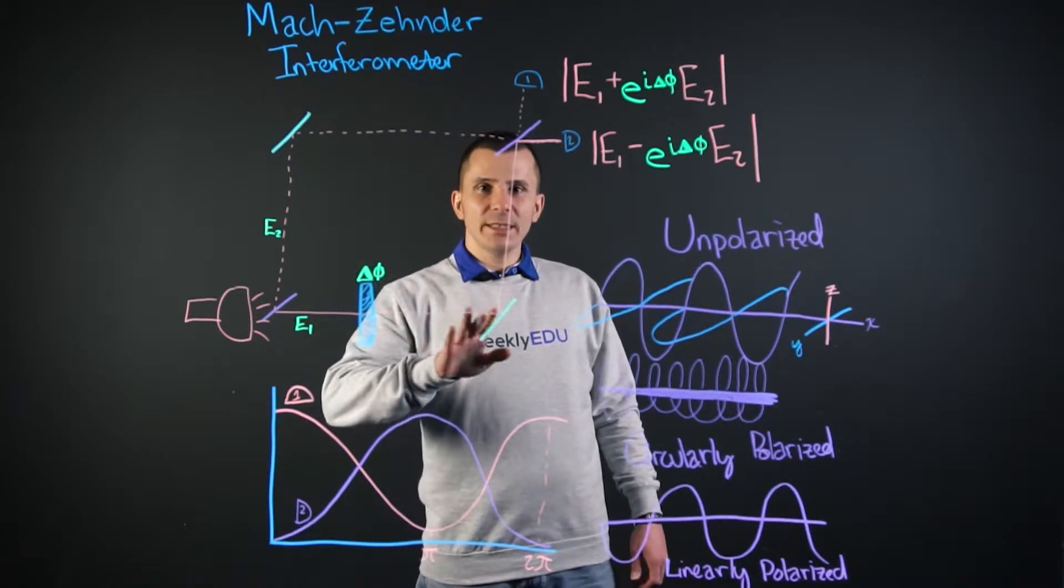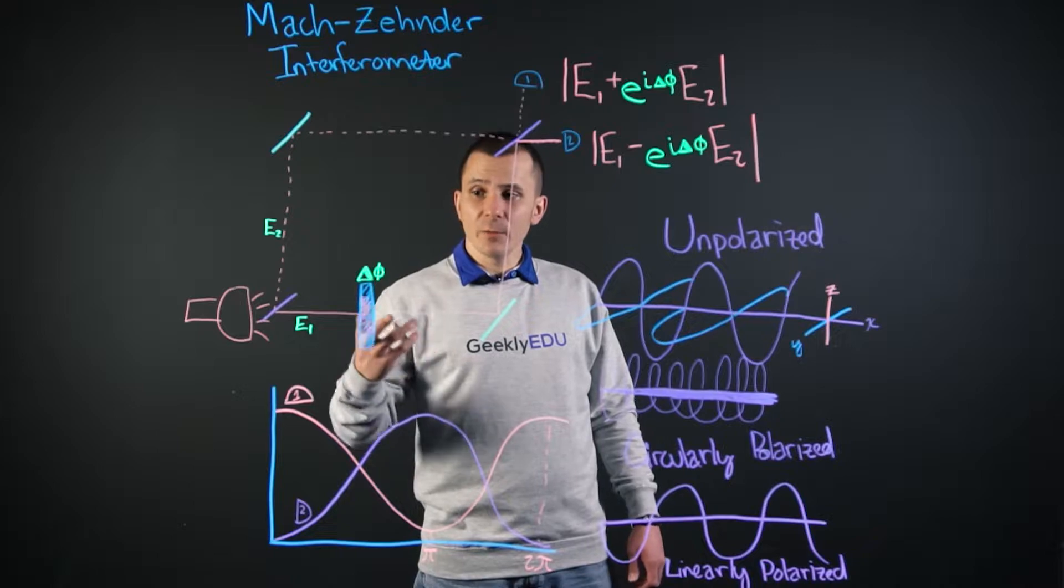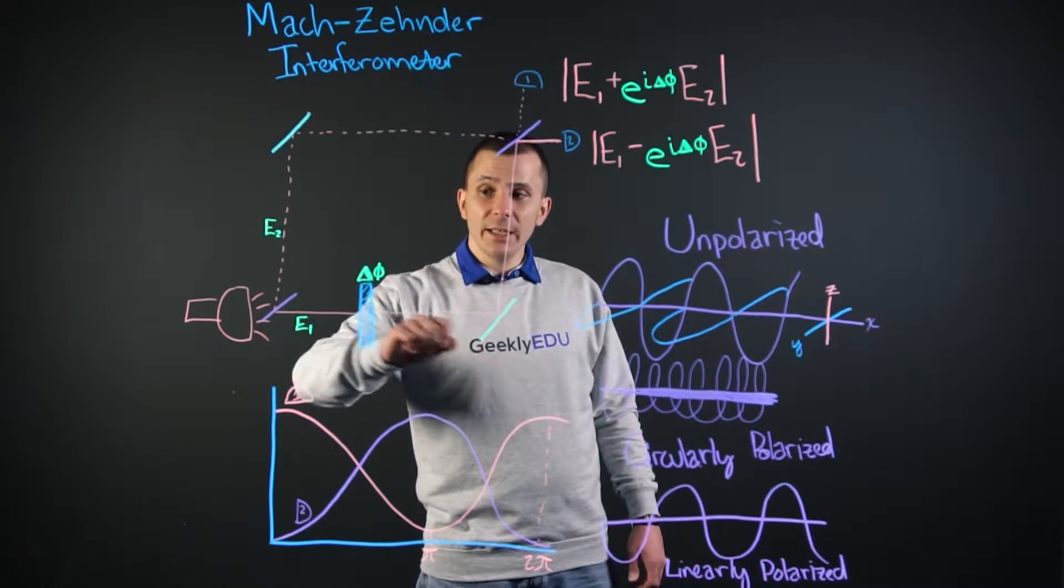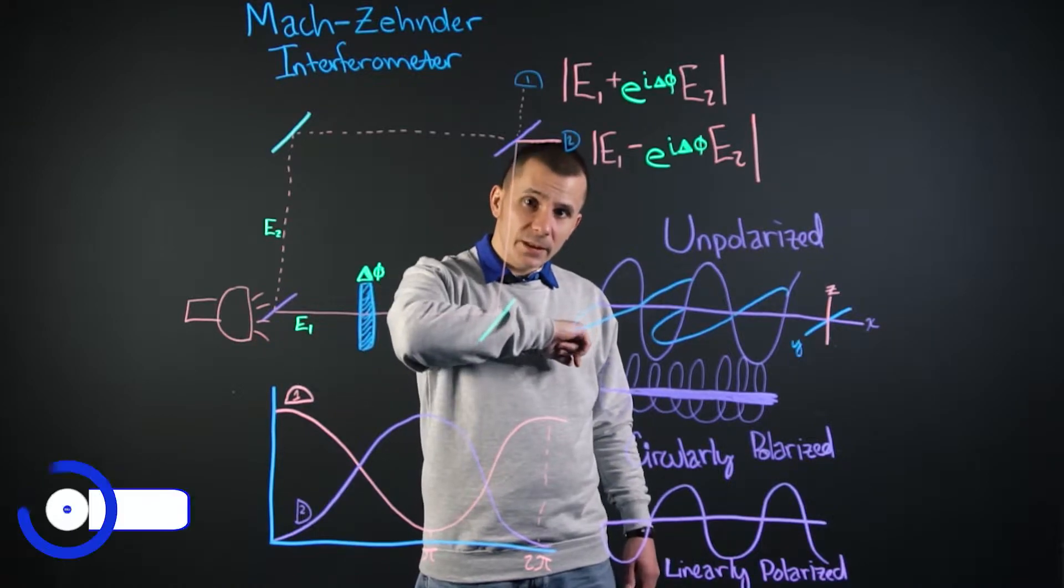The Mach-Zehnder interferometer is a system of two detectors and one emitter. The emitter runs through a polarizer, and the polarizer causes there to be a beam 50% this way and 50% this way, or a split.